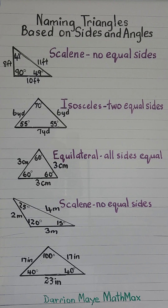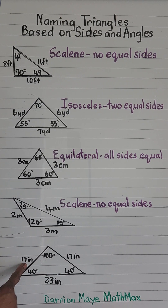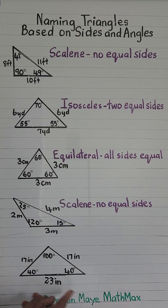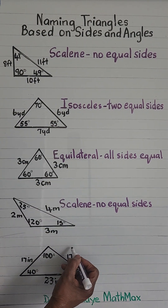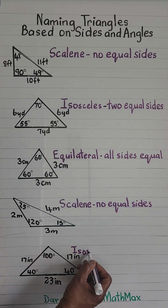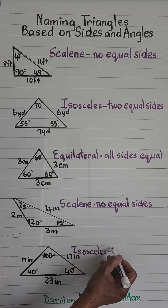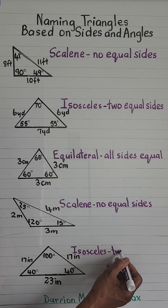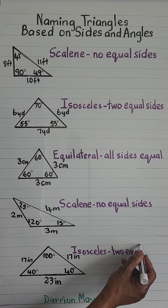And the last one: we have 17 inches, 17 inches, and 23 inches — two equal sides. So this is isosceles. Two equal sides.